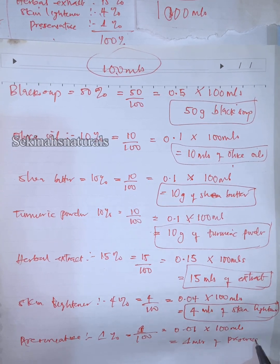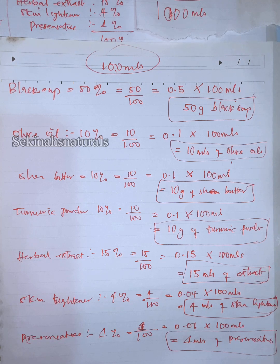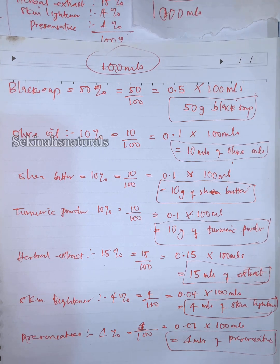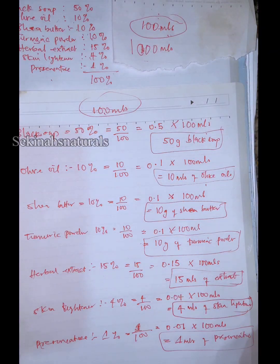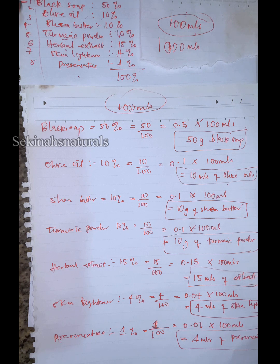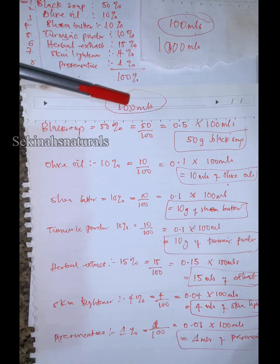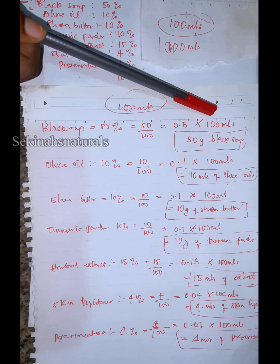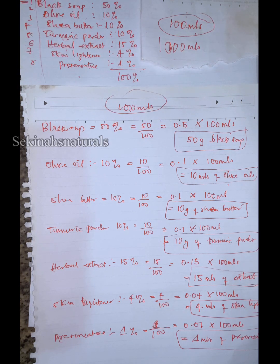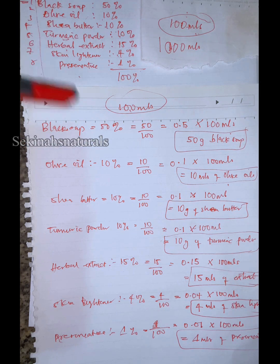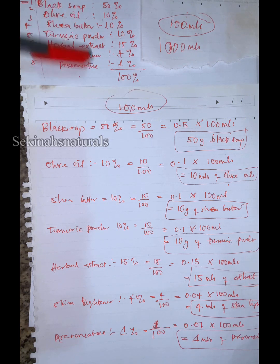Do you guys get that? We used the same exact recipe but for a different amount of black soap to be made — 100 mils. We used the same recipe we used for 500 mils, also for 100 mils, and we got different values because the amount reduced from 500 to 100 mils. The difference is: you always take the amount of black soap you want to make and multiply it by the percentage of each ingredient. Black soap is 50% in this recipe; we want to make 100 mils, so 50 over 100 gives 0.5, times total product to be made.